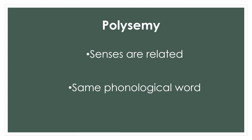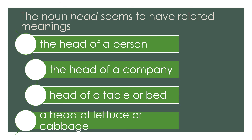For polysemy, senses are related and we have the same phonological word. Let's look at some examples for the word 'head'. The noun 'head' seems to have related meanings: the head of a person, the head of a company, the head of a table, or a head of cabbage. That's the end of the lesson today, thank you.